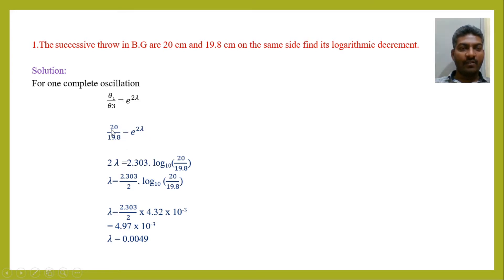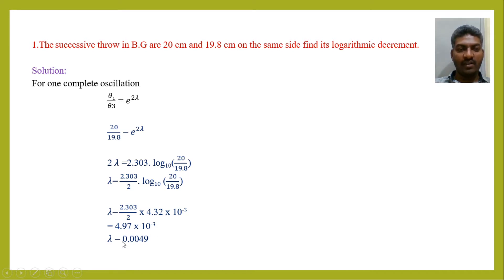Converting log base e to log base 10 requires multiplication by 2.303. Simplifying, λ = (2.303/2) × log(20/19.8) with base 10. After simplification we get 4.32 × 10⁻³. Multiplying through, the final answer is λ = 4.97 × 10⁻³, or equivalently λ = 0.0049.